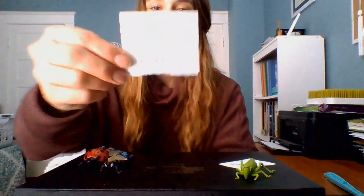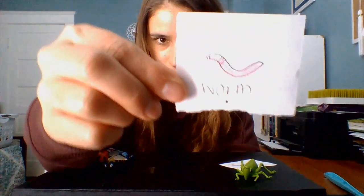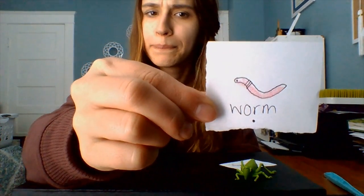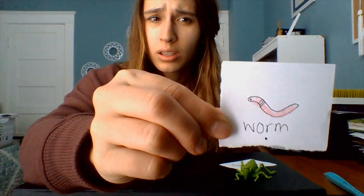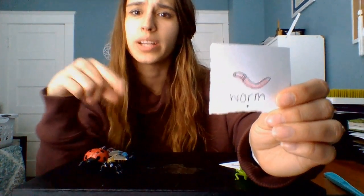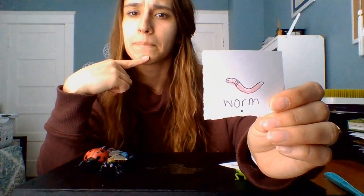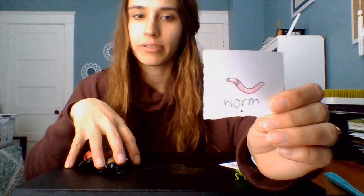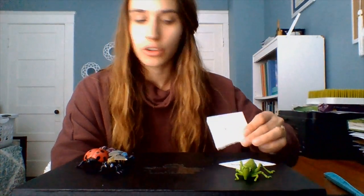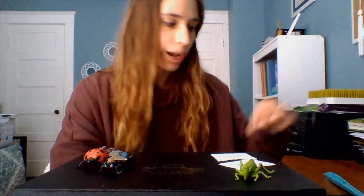Another bug we have is a worm. I'm putting it with bugs because they're creepy and crawly, though a worm is a little bit different than most bugs. A worm is usually pink or brown and slimy, and it has one sound — worm. One part to the word. Does a worm fly or crawl? They stay on the ground or under the ground and crawl.